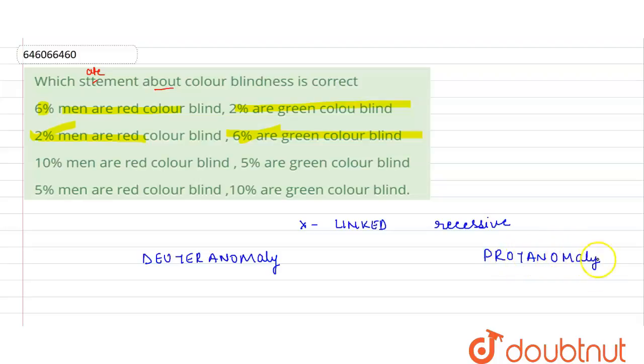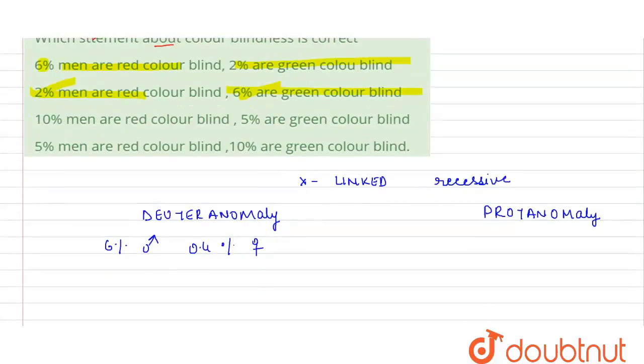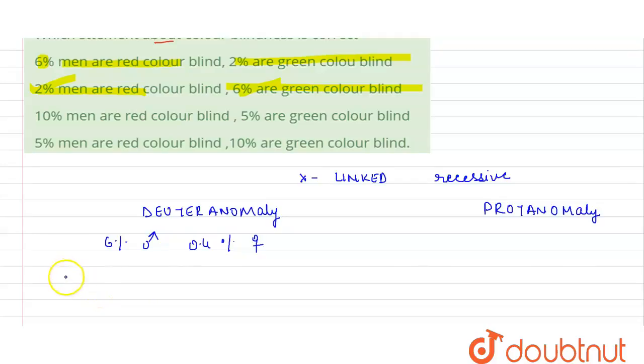Now in deuteranomaly, six percent males and 0.4 percent females, these individuals have a mutation in the medium wavelength of the green pigment, and hence they will be green color blind.